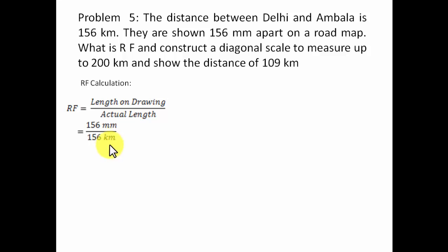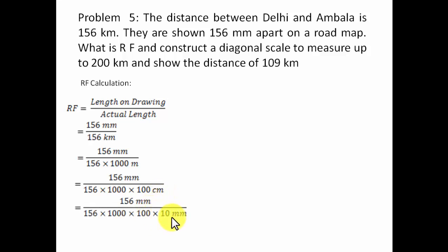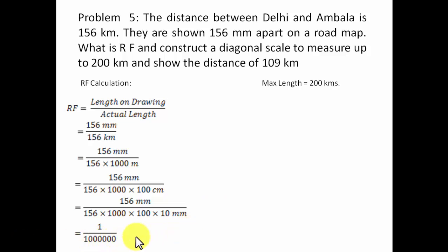We write 1000 meters in place of kilometers, then 100 centimeters in place of meters — since one meter equals 100 centimeters — and one centimeter equals 10 millimeters for the final conversion. You can then cancel millimeters from numerator and denominator, and the 156s cancel each other. The only thing left is 1 over 10 to the power 6.